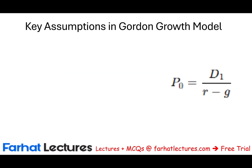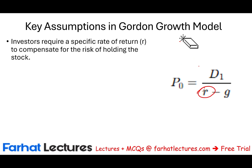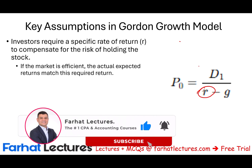So what are some key assumptions in the Gordon Growth Model? The first assumption is R — R is the required rate of return. Investors require a specific rate of return to compensate for the risk of holding the stock. When you invest in a company, you expect a certain rate of return: 5%, 10%, 15%. You can pull this number out of thin air and say you want to earn 10%, though whether that's reasonable is a different story.